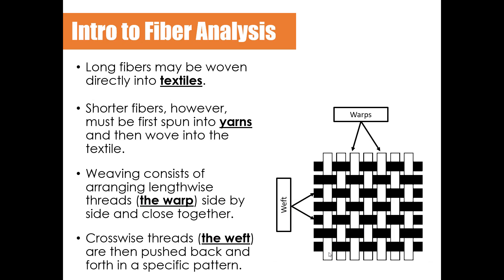Long fibers can be woven directly into textiles, while shorter fibers may have to be spun into yarns before being woven. The weaving consists of arranging lengthwise threads called warps, placed side by side and close together. Cross-wide threads called wefts are pushed back and forth in a specific pattern. If asked to label the warp and weft in an image, remember: warp threads run vertically and weft threads run horizontally.